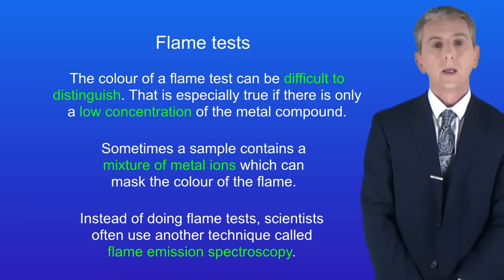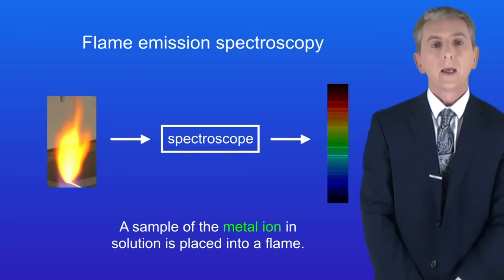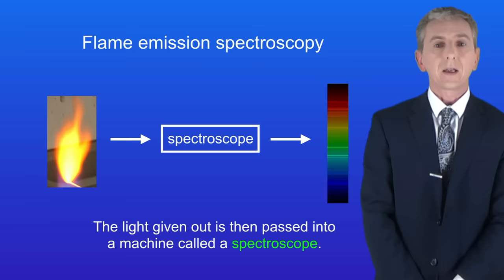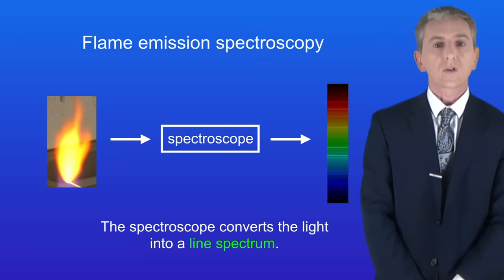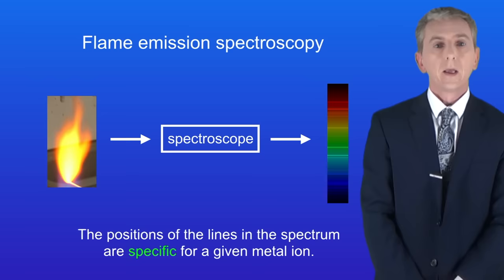Now instead of doing flame tests scientists often use another technique called flame emission spectroscopy. In flame emission spectroscopy a sample of the metal ion in solution is placed into a flame. The light given out is then passed into a machine called a spectroscope. The spectroscope converts the light into a line spectrum like this.